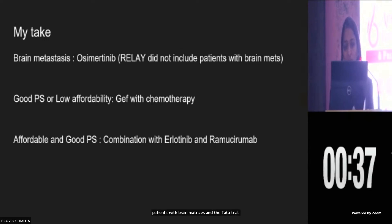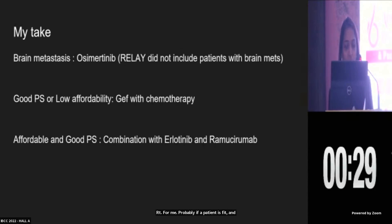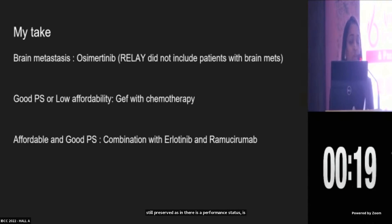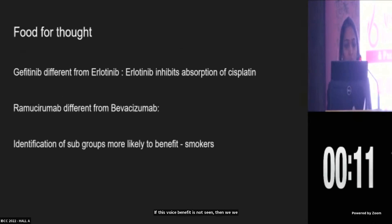For me, if a patient is fit and affordability is an issue, I would go for gefitinib with a chemotherapy combination. If a patient has a good performance status and can afford it, I would try erlotinib with ramucirumab — of course, until we wait for the OS data. If the OS benefit is not seen, then we will be left with only the gefitinib and chemotherapy combination. Thank you.